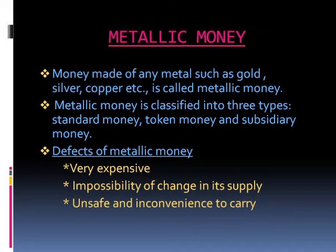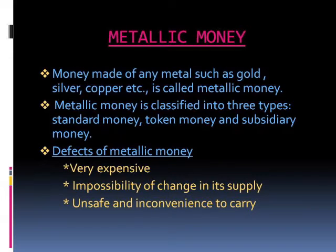Because of the defects of commodity money, the next invented money was metallic money — money made up of any metal such as gold, silver, nickel, copper, etc. Metallic money is classified into standard money, token money, and subsidiary money. This money also faced defects: impossibility of change in its supply, very expensive, unsafe and inconvenient to carry, and easily stolen.